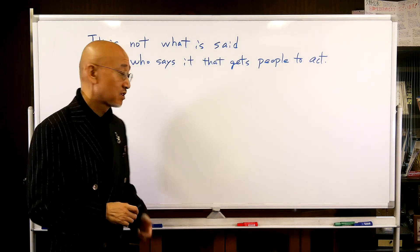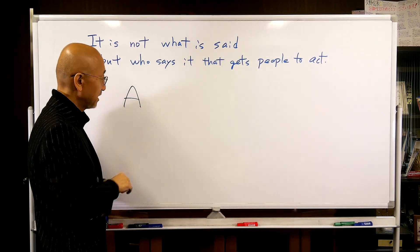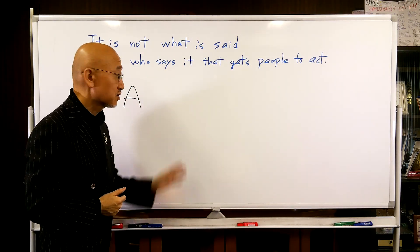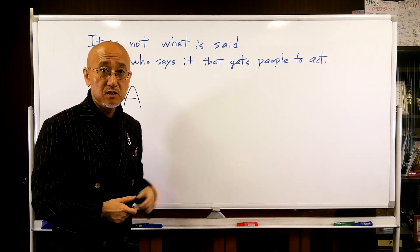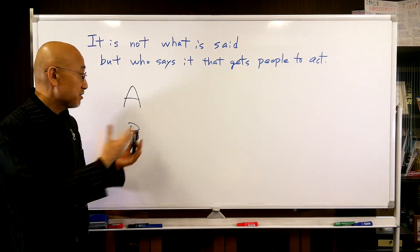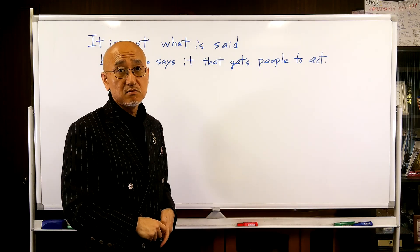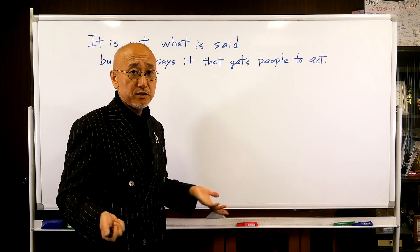For example, manager A says something to his subordinates, but subordinates didn't listen to his opinion. However, manager B says the same thing to the same subordinates. Subordinates obey his opinion.